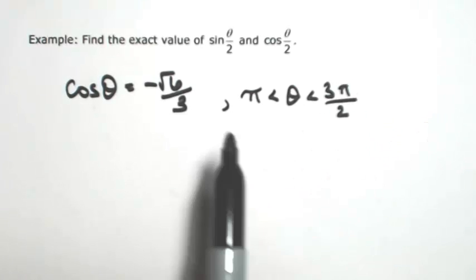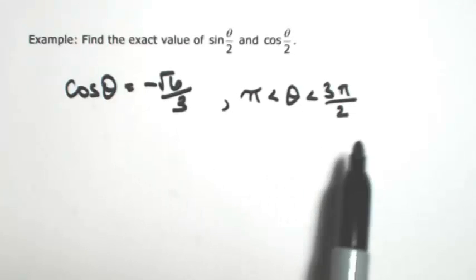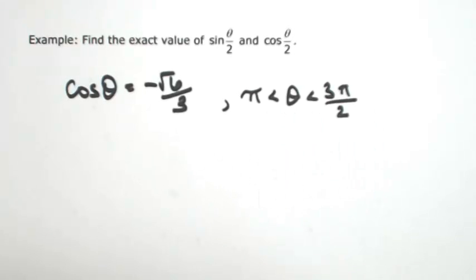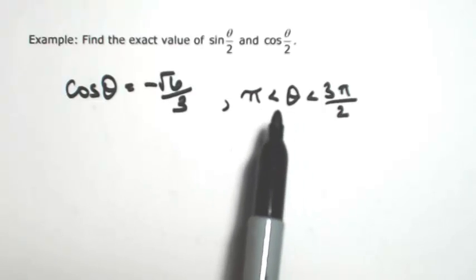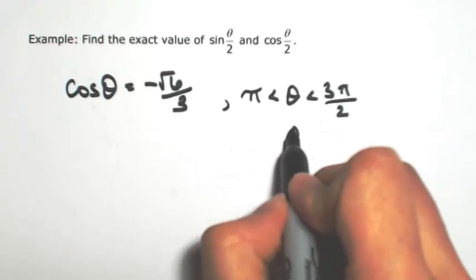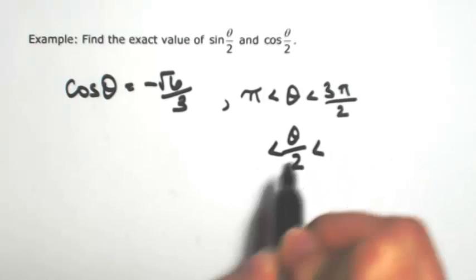So that's important to know, first of all, because cosine can be negative in two quadrants, so now we know that it's in the third quadrant. Another reason we need to know that is because theta is between pi and 3 pi over 2, so we need to know where is theta over 2 in between.